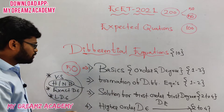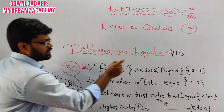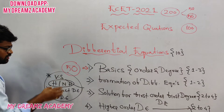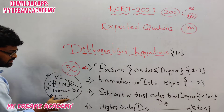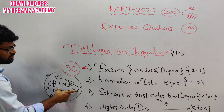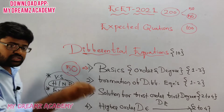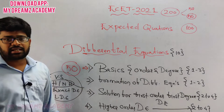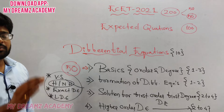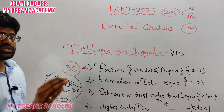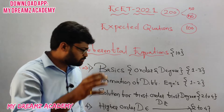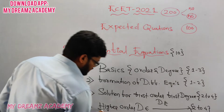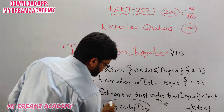So the study order to follow is: first read order and degree, then variable separable, then linear, then exact differential equation. If you still have time, go through homogeneous and non-homogeneous — but that is not that much important. Then go for higher order differential equation.